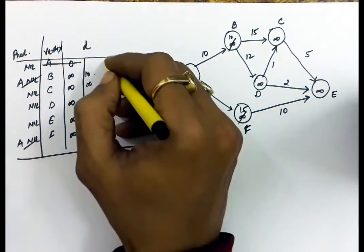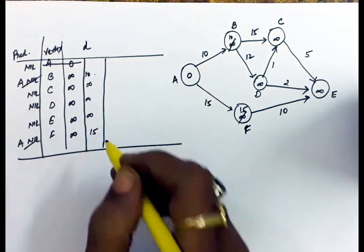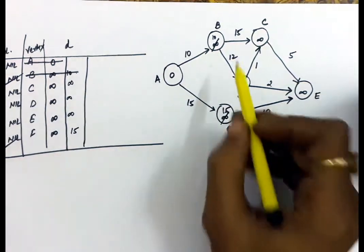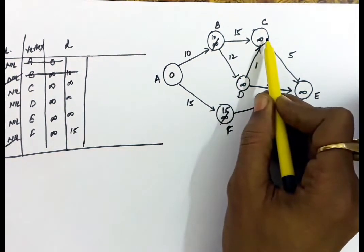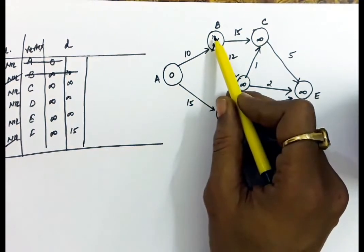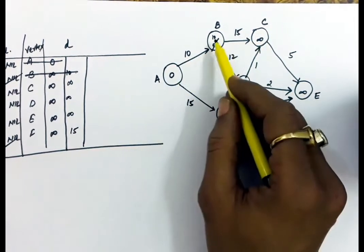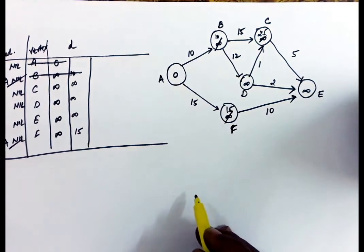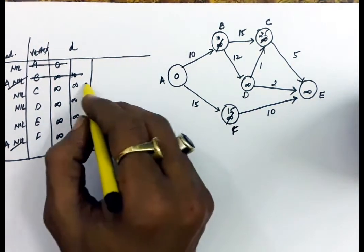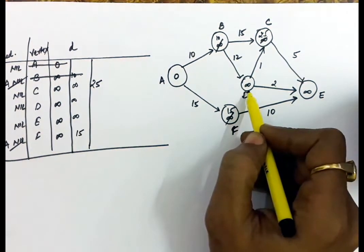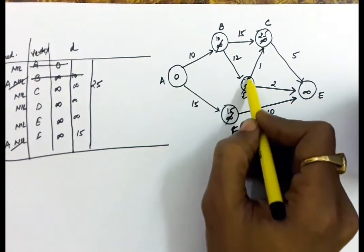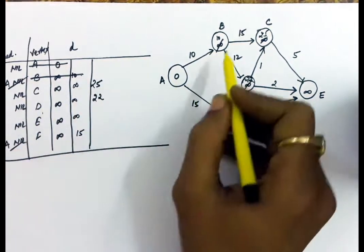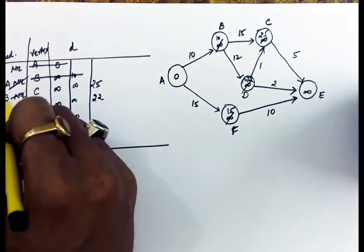Out of the available distances, 10 is the minimum, so we delete B and explore its connections. B to C has cost 15: 10 plus 15 = 25, which is less than C's earlier distance of infinite, so C is updated to 25. For D, it will be 10 plus 12 = 22, so D is updated to 22. Since C and D have both been explored from B, their predecessors are set to B.